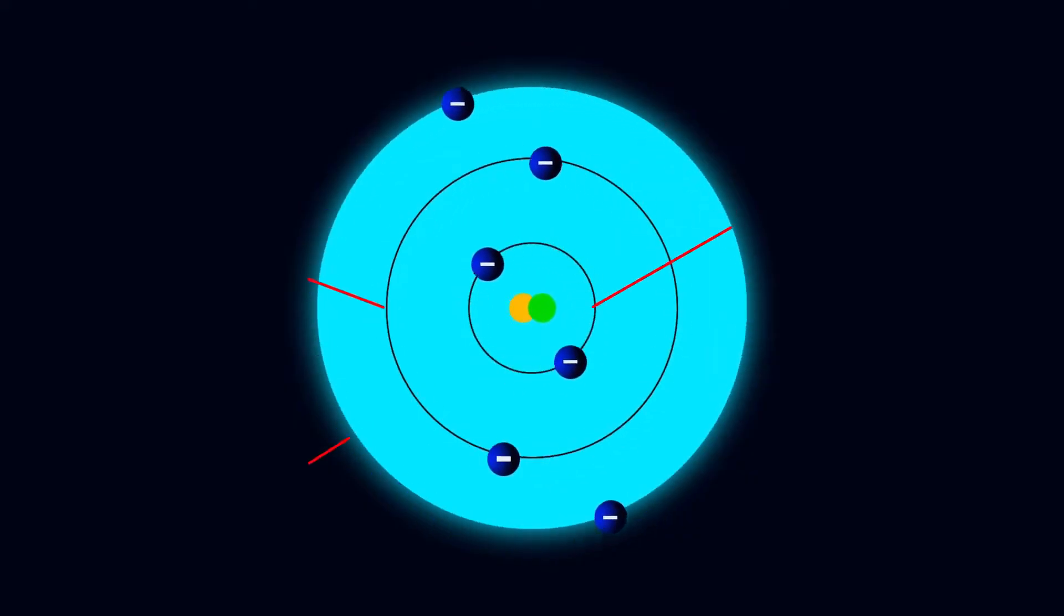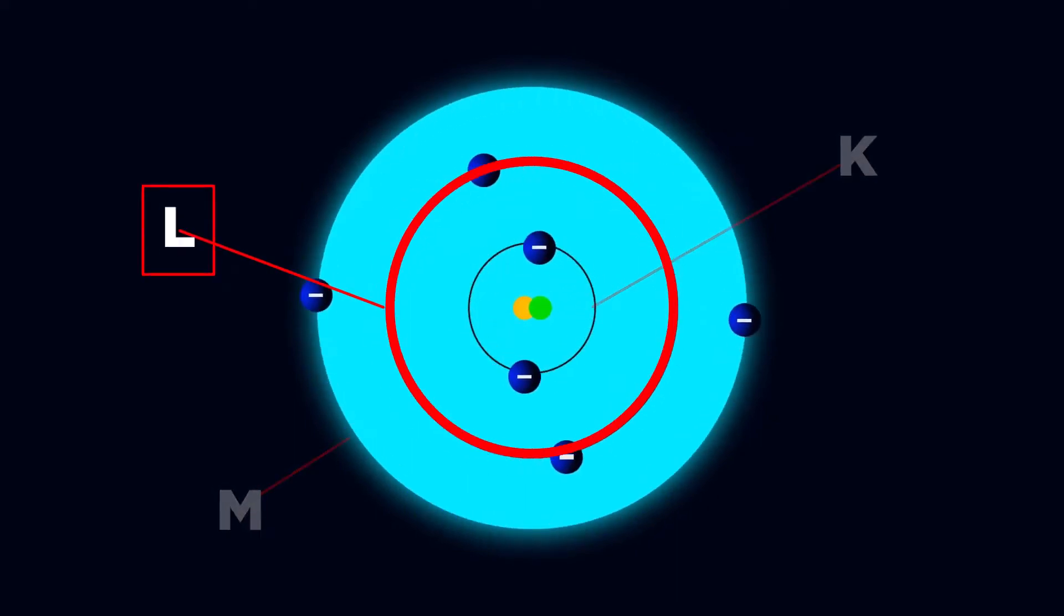What is the L shell? The L shell is simply the second innermost shell of electrons surrounding an atomic nucleus.